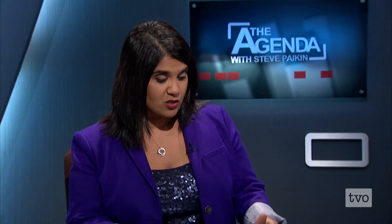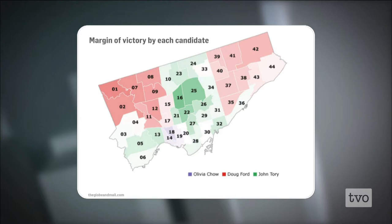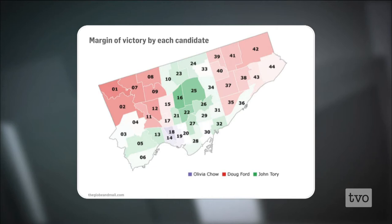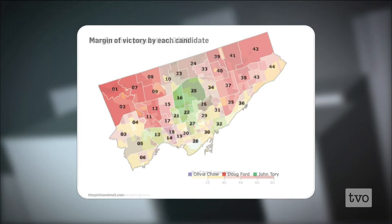We're going to talk about how this city is divided, starting with a couple of maps. The first is how people voted. The areas in red — especially dark red — are where people voted with a wider margin for Doug Ford. The green areas are for John Tory, and those lilac-purple areas near wards 18 and 14 were for Olivia Chow. The darker the area, the bigger the margin of victory.